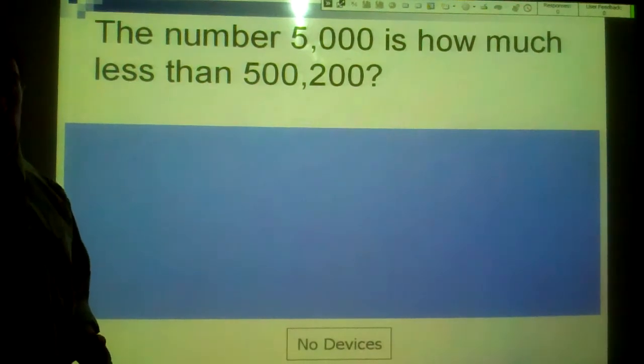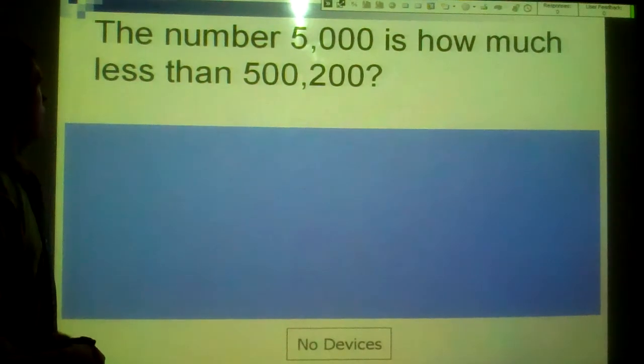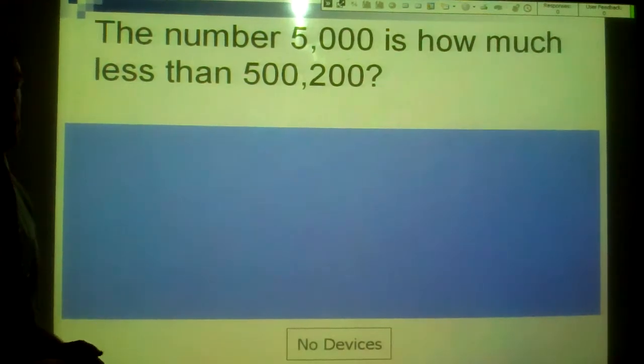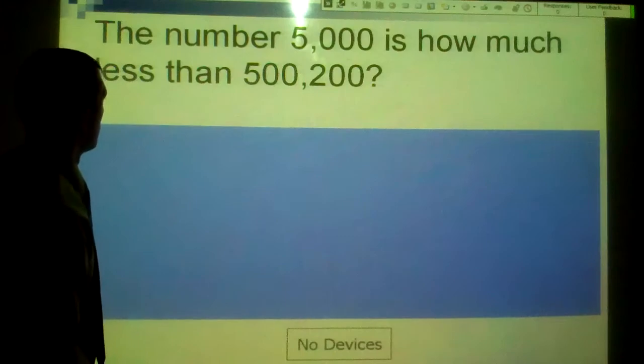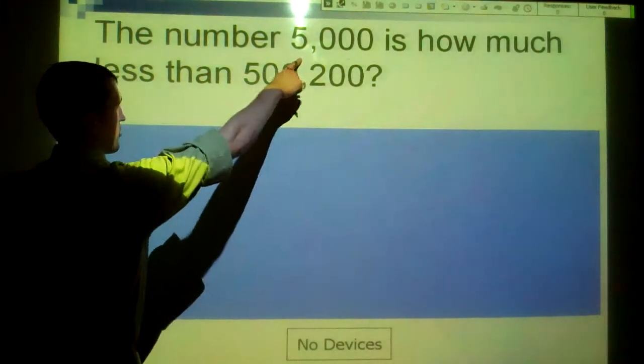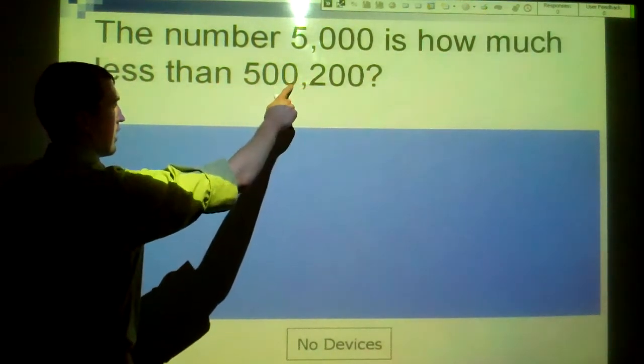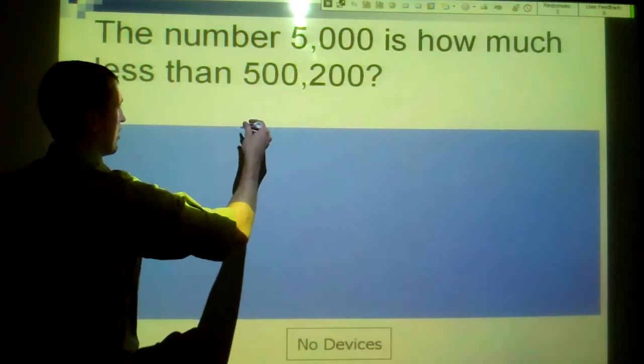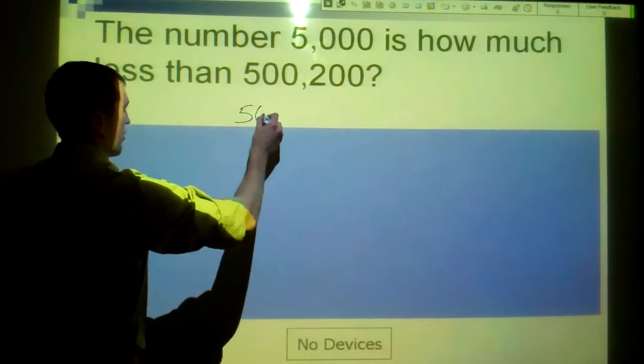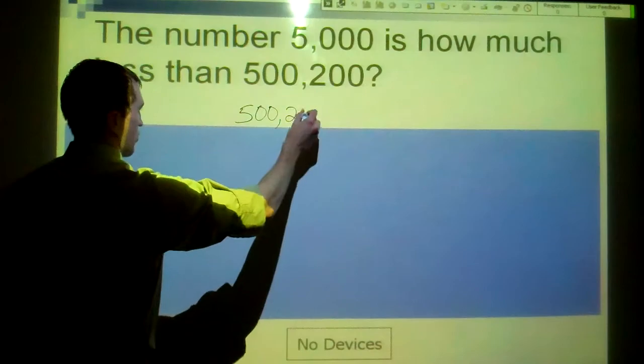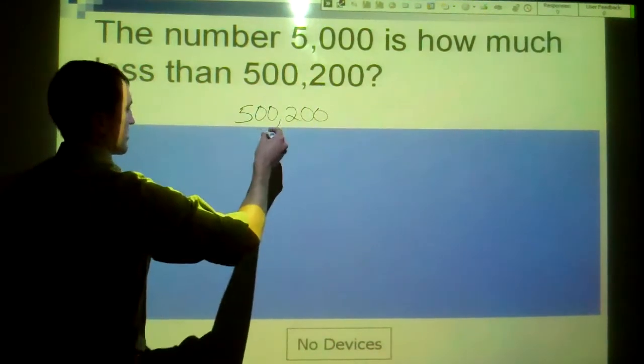A similar problem, but with a lot less words. The number 5,000 is how much less than 500,200. How much less is 5,000 than this number? We're going to take away 5,000 from here. So that's 500,200 minus 5,000.